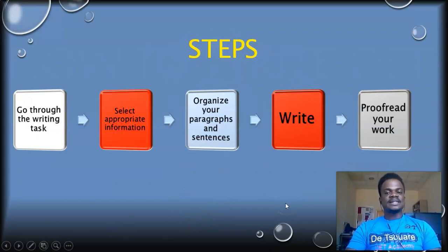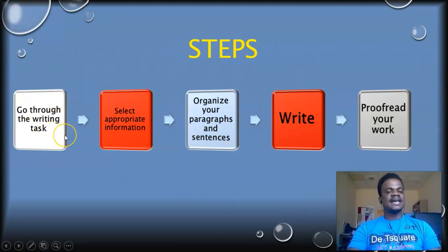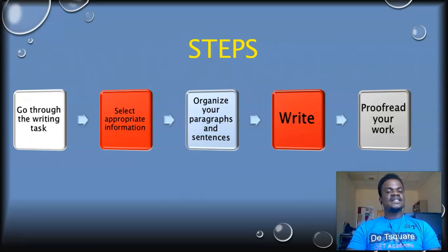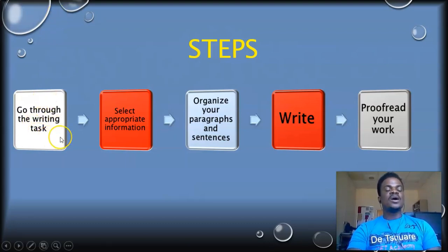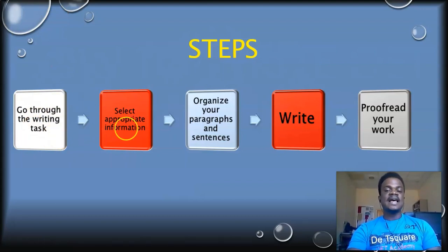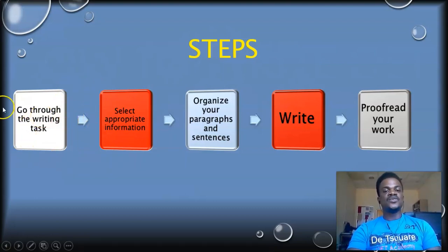Now let's look at the steps to take when writing any letter. First, go through the writing task — in OET you are given five minutes to do this. Go through the case notes to understand what you are asked to do: is this a transfer letter, a referral letter, or a discharge letter? What exactly do you want the reader to do for this patient? You can get this information from the writing task.